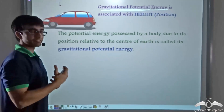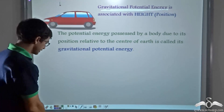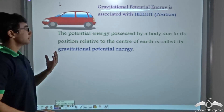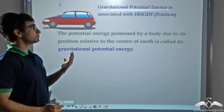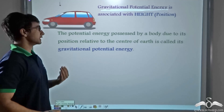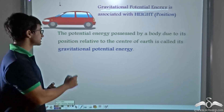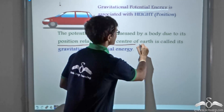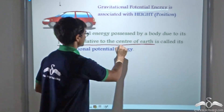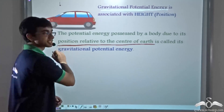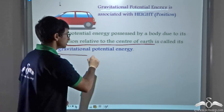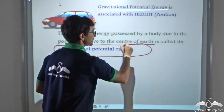How can we define gravitational potential energy? The potential energy possessed by a body due to its position relative to the center of the earth is known as gravitational potential energy.